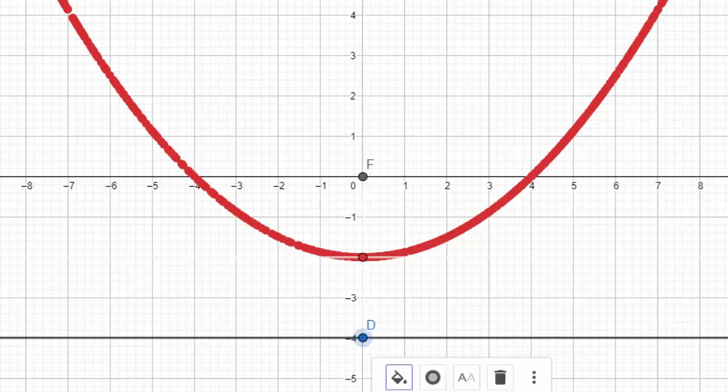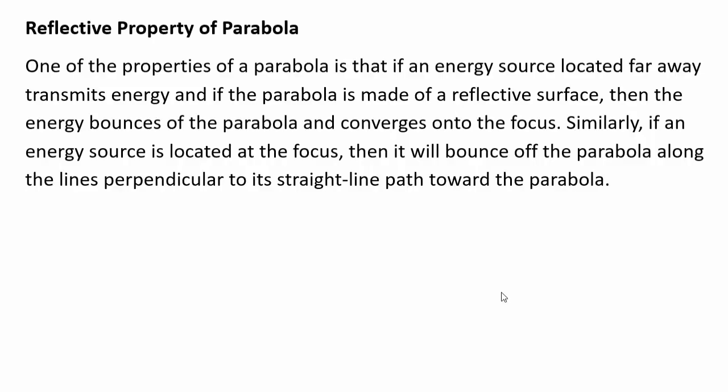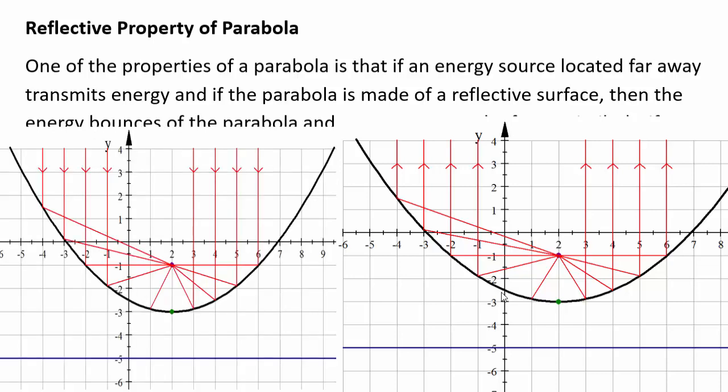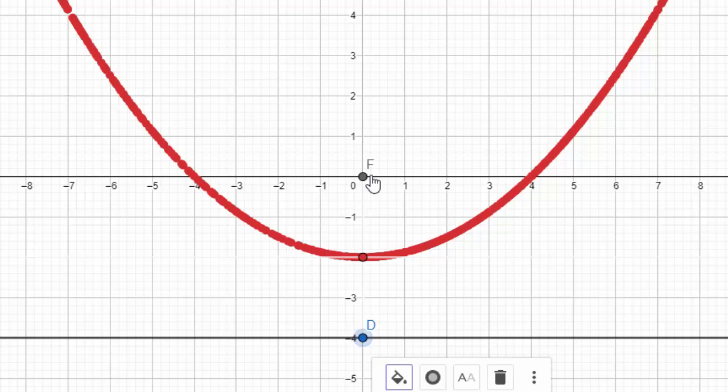All points that are exactly the same distance from a fixed point and a fixed line form a parabola. The reflective property of parabolas is that if the focus is where an energy source is located and the parabola is a reflective surface, all rays coming out of that focus point will bounce straight out from the parabola, making it a wide beam. This principle is seen in headlights, searchlights, and parabolic mirrors, which are also used in satellite dishes.